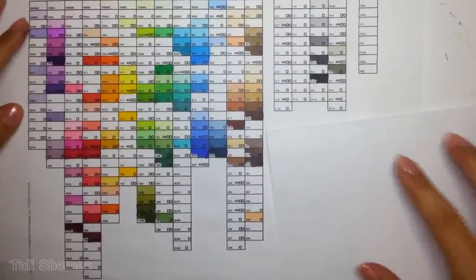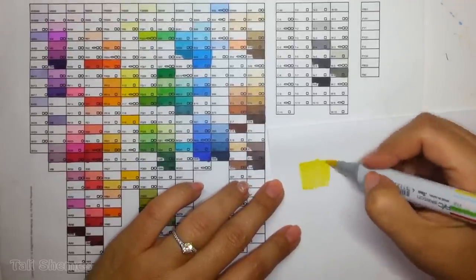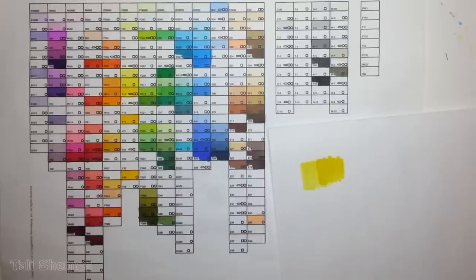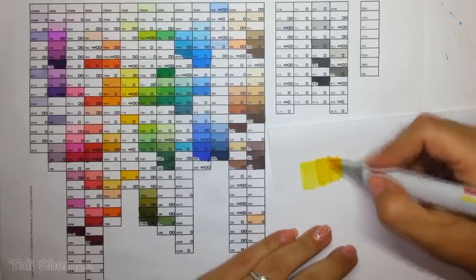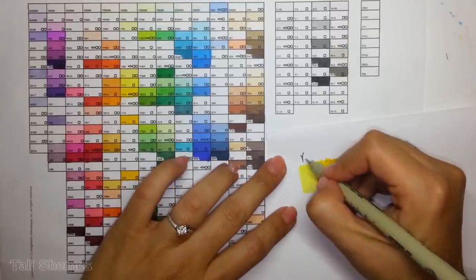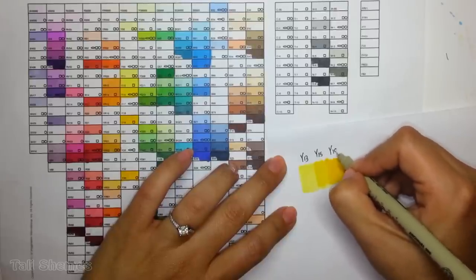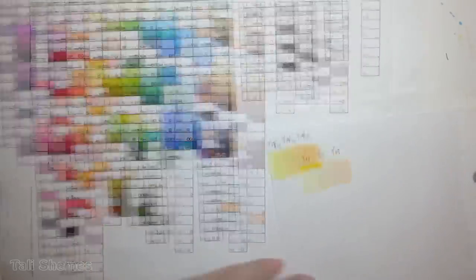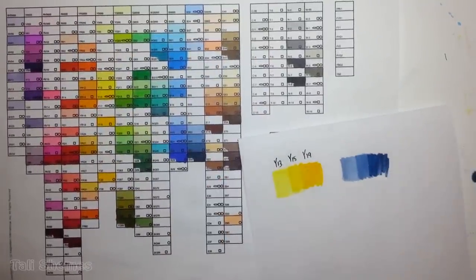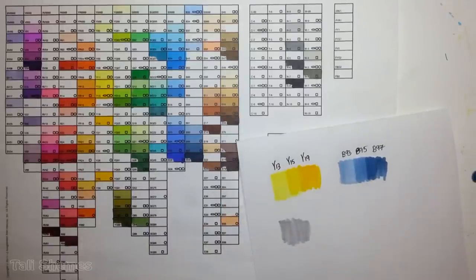Before I start coloring, I like to look at my color chart of Copic markers and make some tests to see color combinations and how they look together. This is what I'm doing now - testing out different tones so I can blend them easily. In this drawing I don't have that many colors, just yellow, blue, and gray, so it doesn't take that long. Sometimes it takes me half an hour just to choose the colors and find the right combinations.